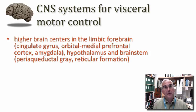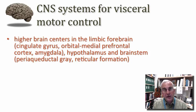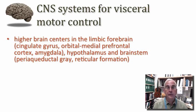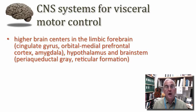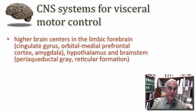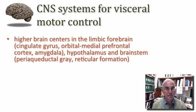Beginning up in the forebrain, we'll talk about higher brain centers principally in the ventral and medial aspects of the forebrain — those parts we associate with the limbic system. I prefer the term limbic forebrain rather than limbic system, because there's really not one system associated with this set of structures, but probably multiple systems with different kinds of functions. These structures form a limbus or rim around the corpus callosum and the diencephalon, extending into the medial parts of the temporal lobe.